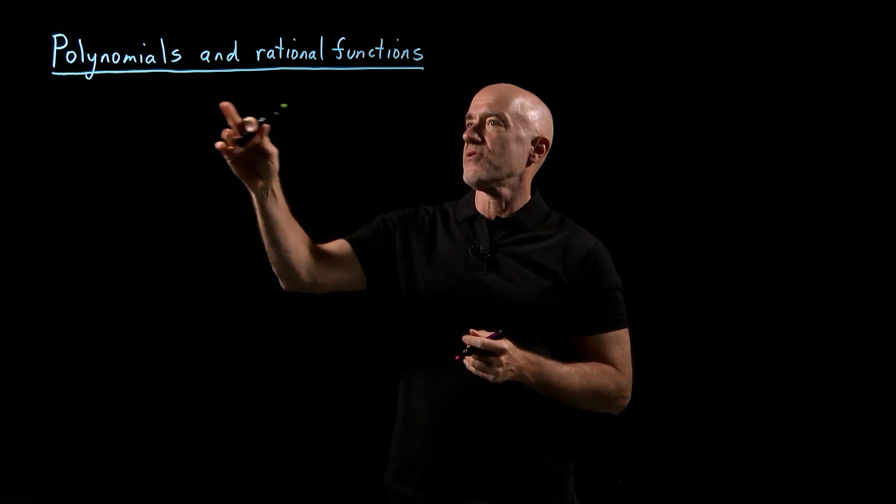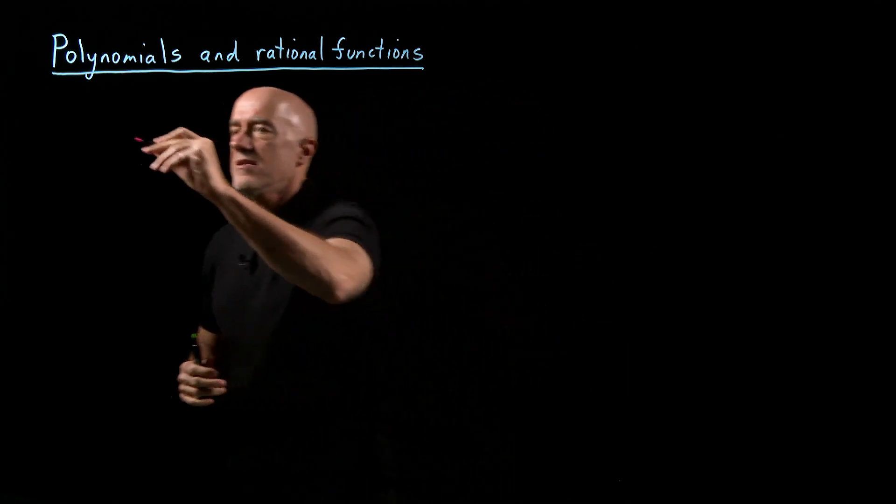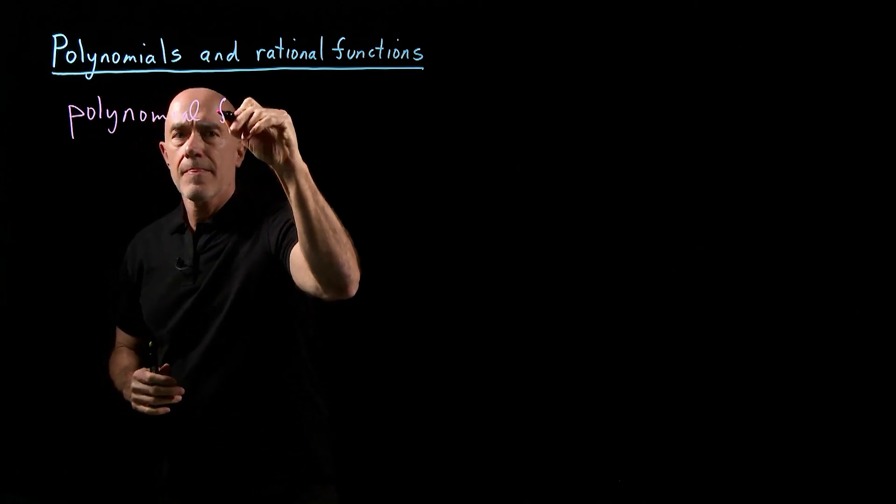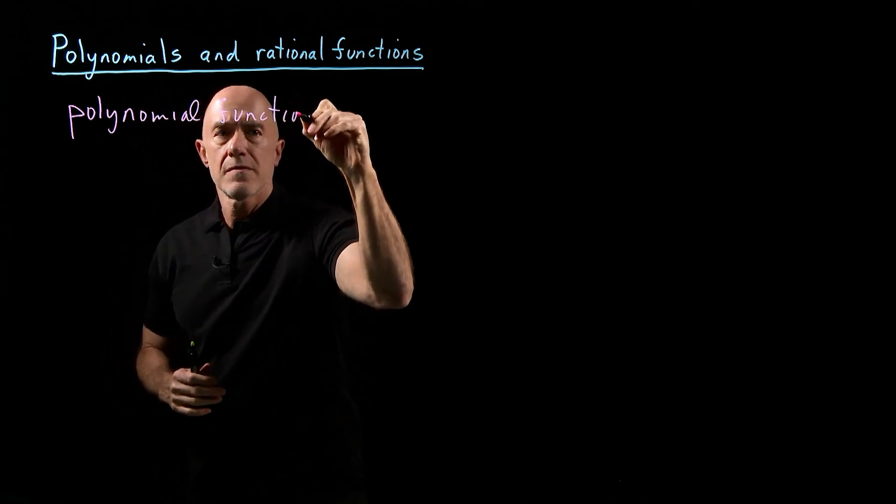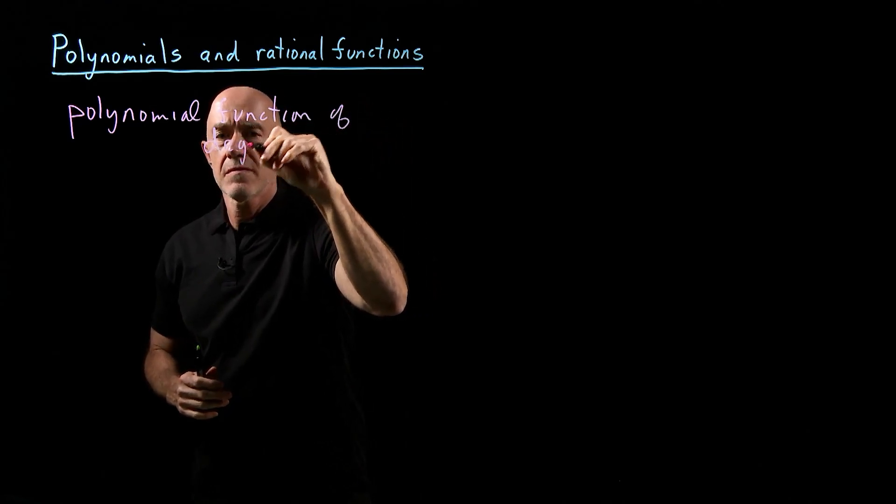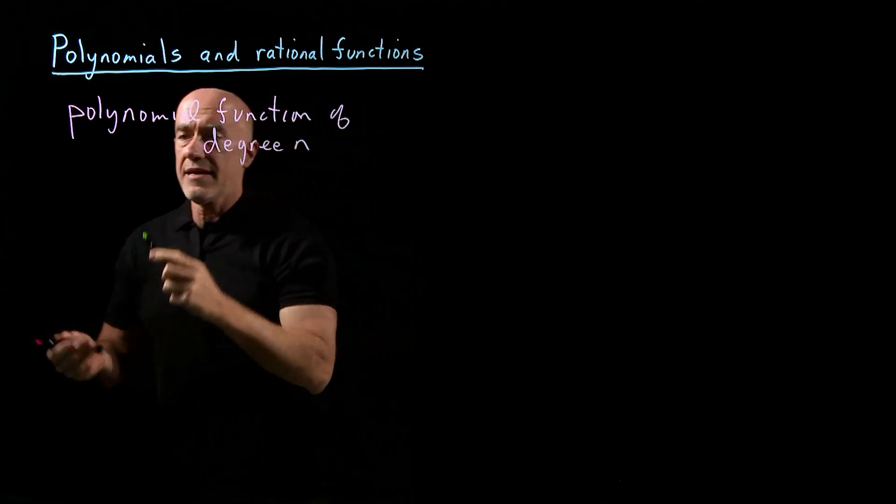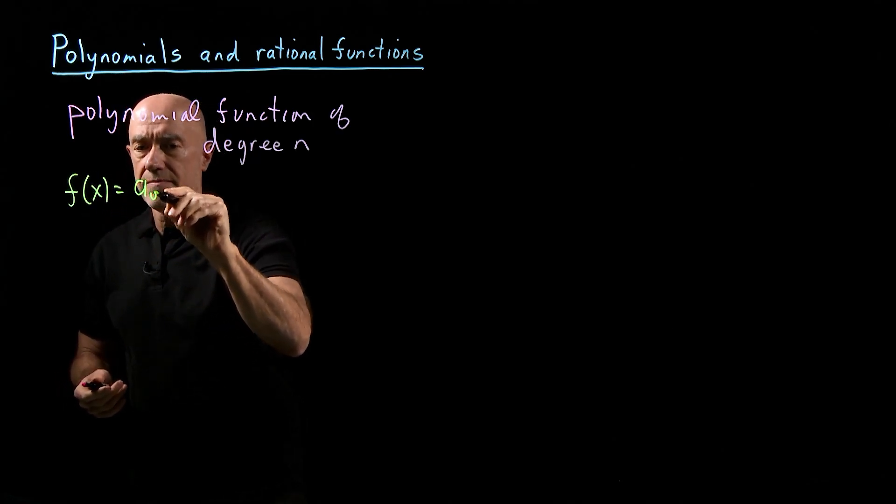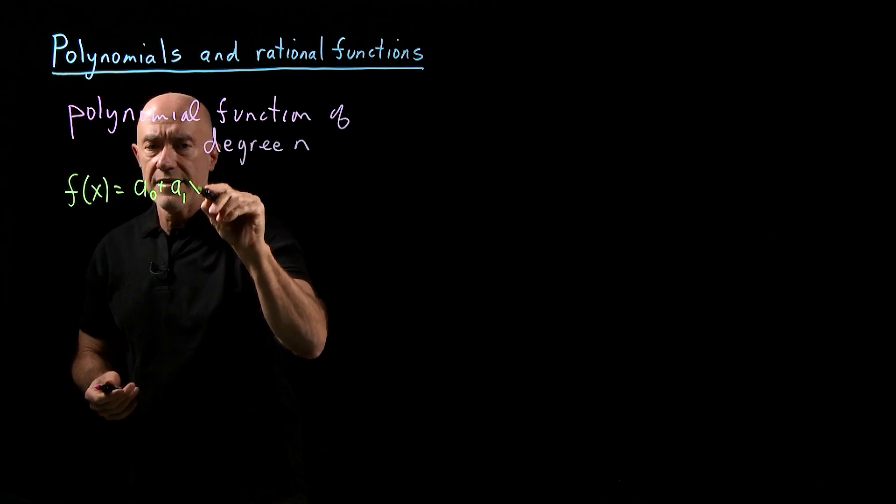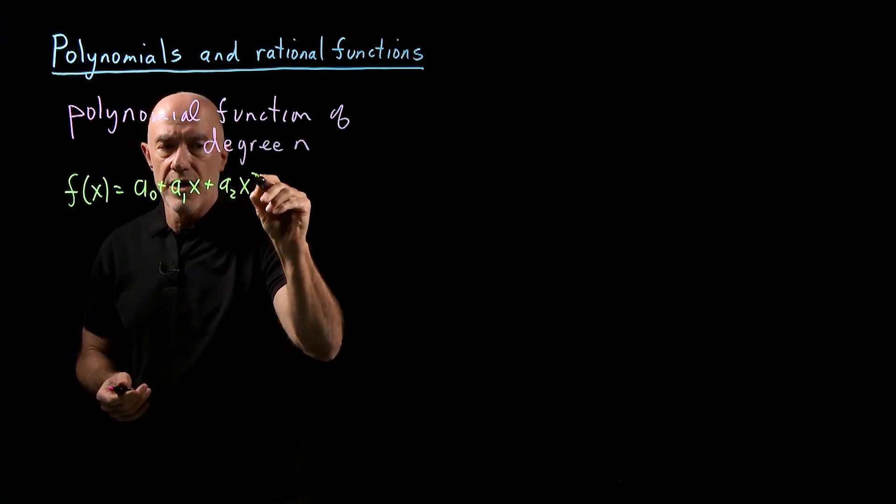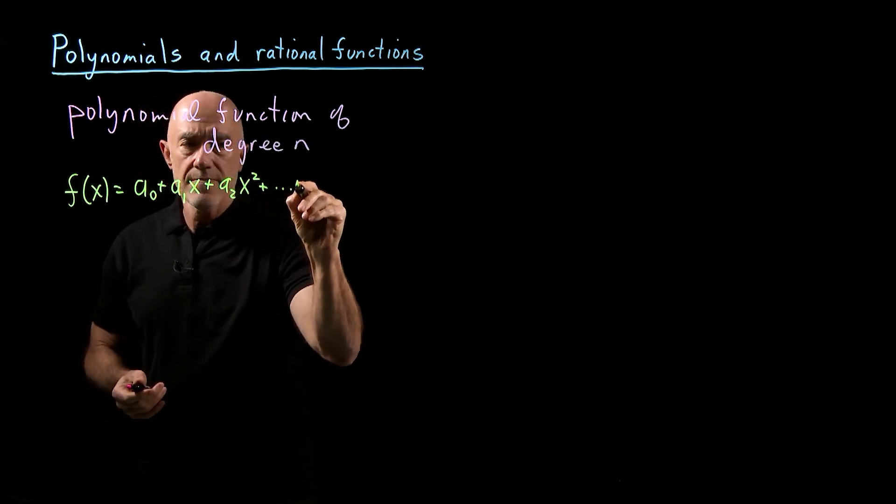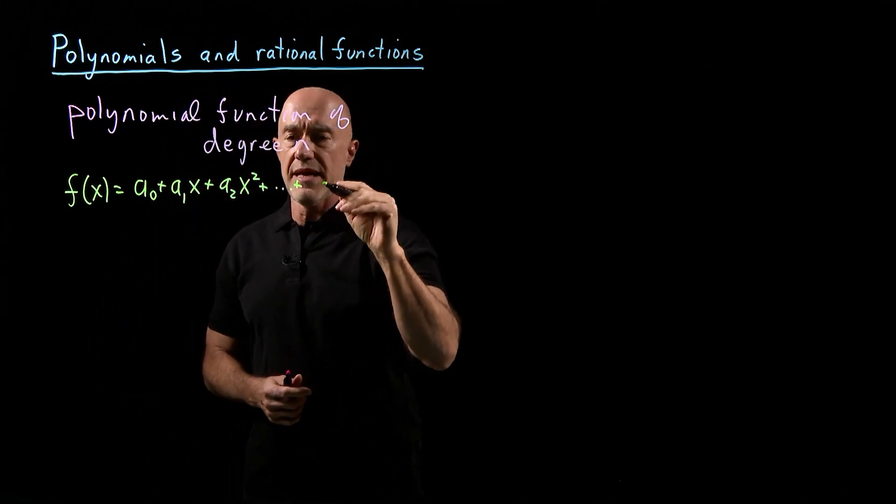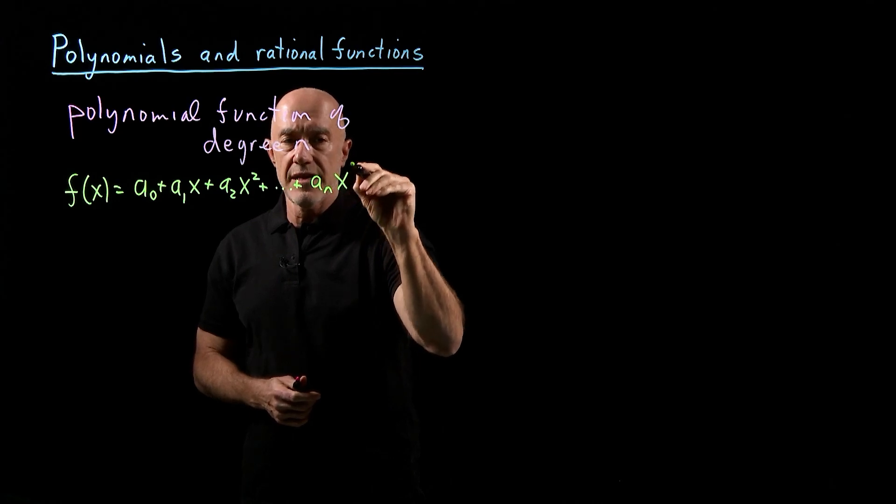Let's start with polynomials and rational functions. A polynomial function of degree n looks like f(x) equals a₀ plus a₁x plus a₂x², etc., up to the last power of x, which will be n, so aₙxⁿ.